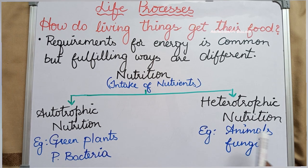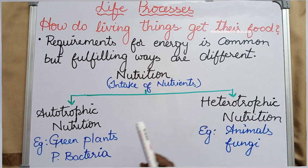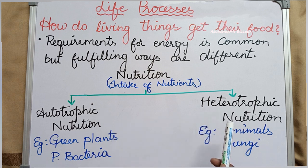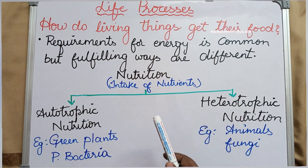In heterotrophic nutrition, organisms either directly or indirectly depend on autotrophs for food material. For example, herbivores directly depend on green plants for food material, and carnivores eat herbivores — meaning they depend indirectly on autotrophs for food.